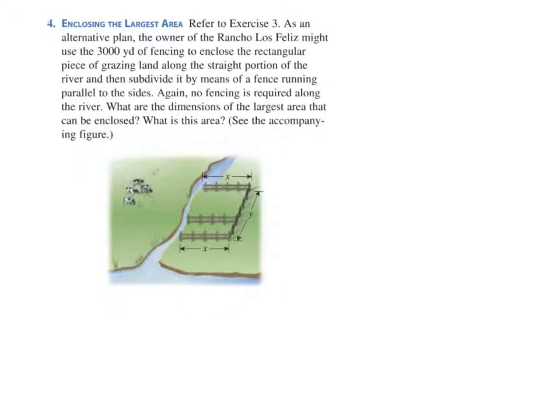Let's take another look at an optimization problem. In this case, the ranch owner is going to have 3,000 yards of fencing to enclose a rectangular piece of grazing land along a straight portion of a river.